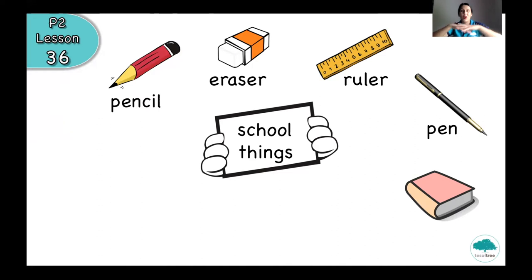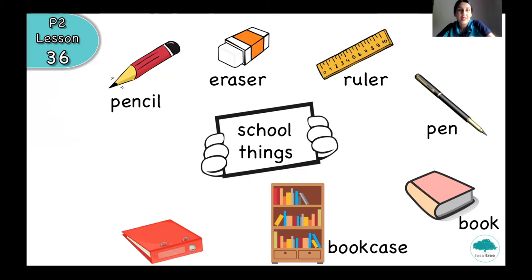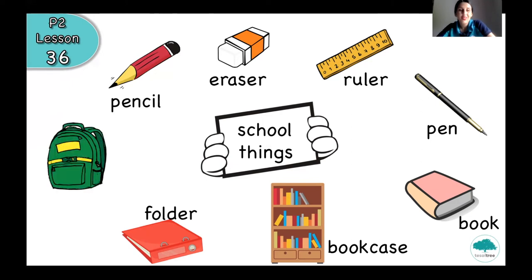And do you remember what is this? You can open and read a book — a book. Let's check one more. Can you guess what is this? Here we can keep our books — it's a bookcase. Very good. And what is this? We can keep our papers — this is a folder. And the last picture: you can put all your school things and go to school with a bag. Now let's read together our words: pencil, eraser, ruler, pen, book, bookcase, folder, and bag.